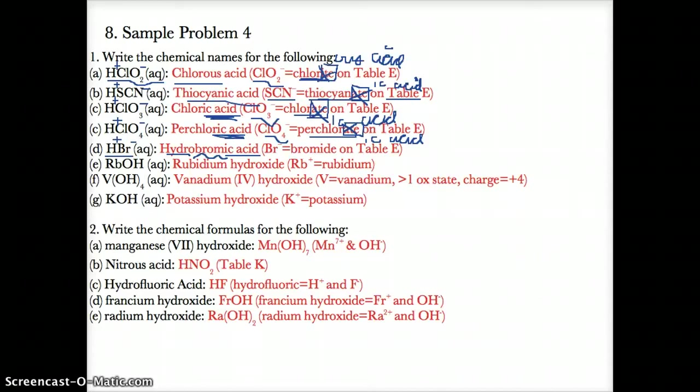For part E, it's straightforward — name it like a normal hydroxide. Since rubidium (Rb) has only one oxidation state, followed by OH, you name it rubidium hydroxide.